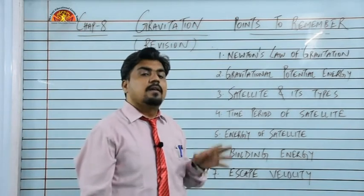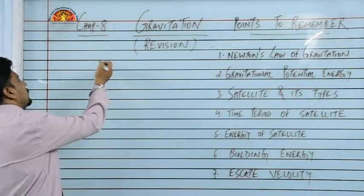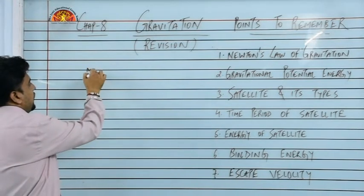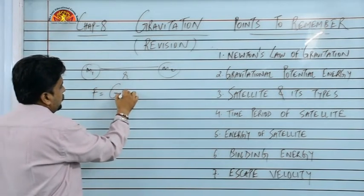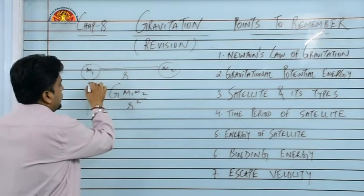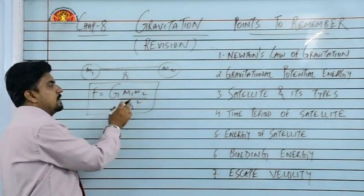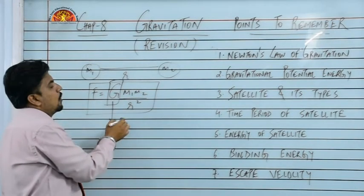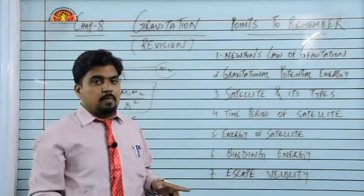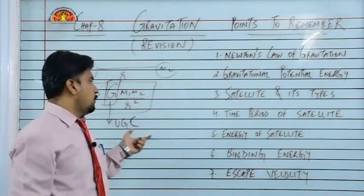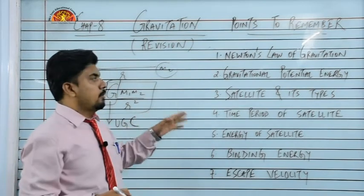First point: Newton's law of gravitation. Newton's law of gravitation is about the force between two masses when kept a distance apart. Like if this is M1, this is M2 and these are kept a distance apart, then F, the force between them would be G M1 M2 by R square. This is Newton's law of gravitation, where M1, M2 are the masses, R is the distance between them, and this capital G is proportionality constant, also known as universal gravitational constant. We have discussed the values and every detail about it.